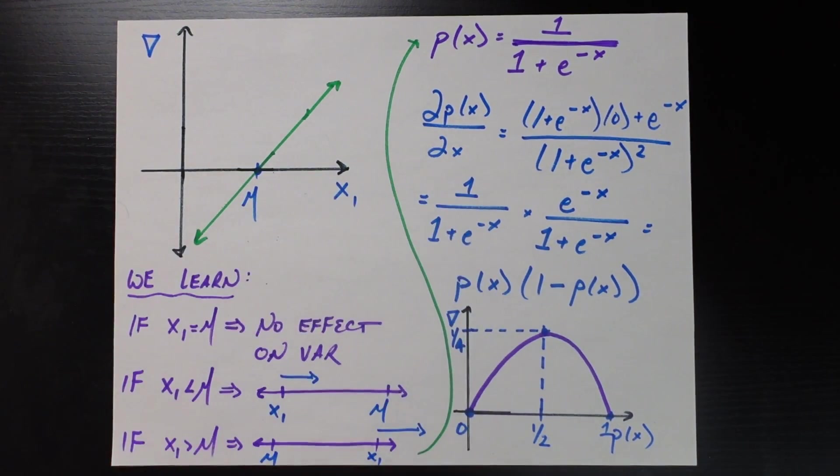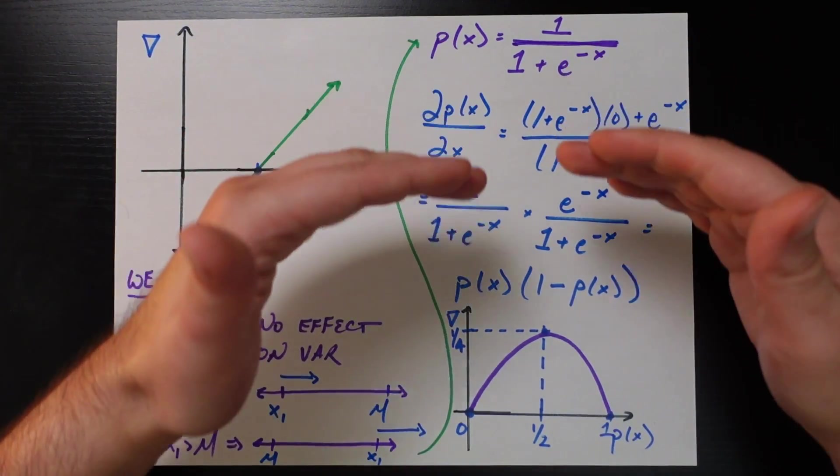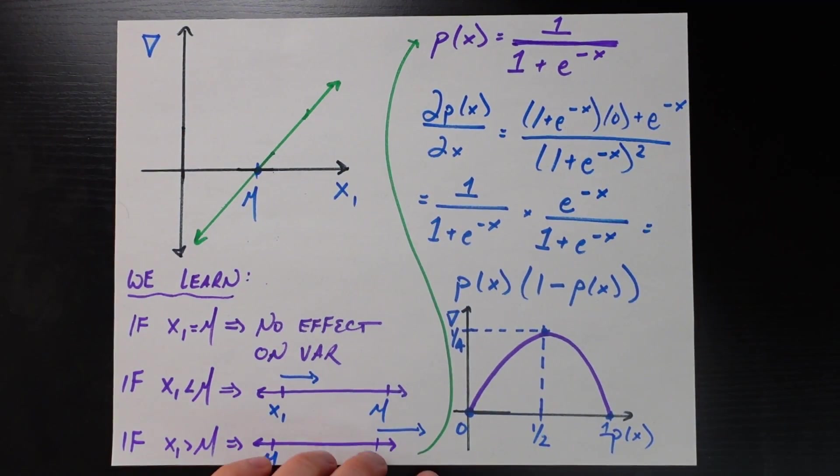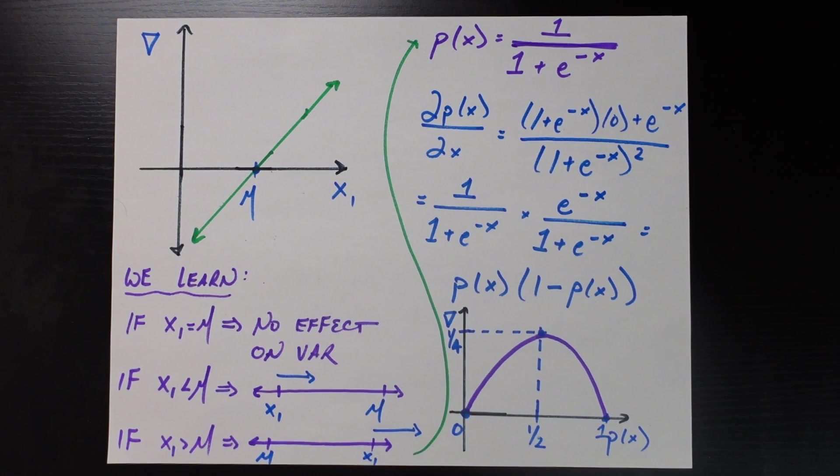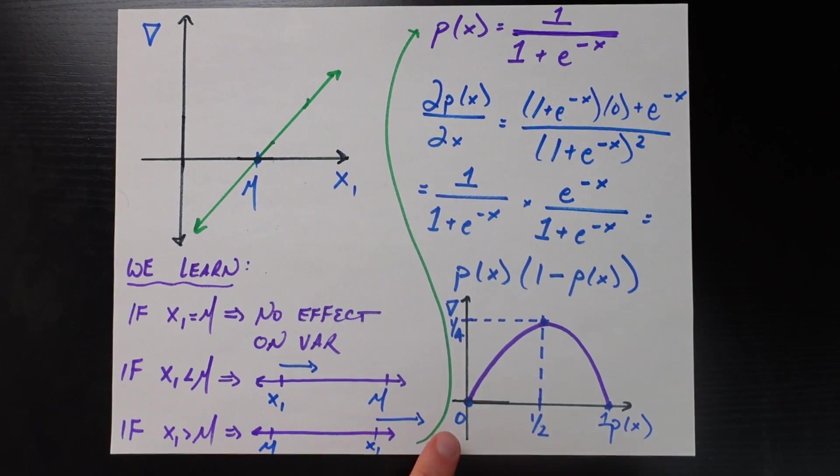So if we take the derivative, here we apply the quotient rule of derivatives again. We actually simplify very, very, very nicely to the derivative of the probability with respect to that feature is going to be the probability itself times one minus the probability itself. And if I go ahead and plot that out on this chart, you see that it's this inverse parabola where at zero and one that derivative is exactly equal to zero. And at one half, when that probability is one half, then our derivative is exactly at its maximum.